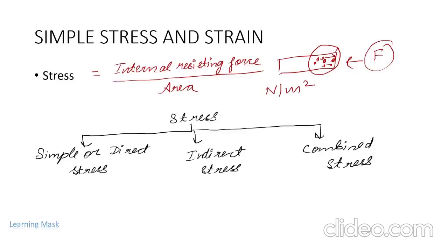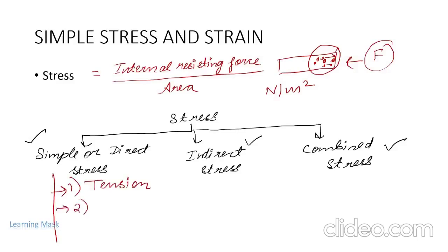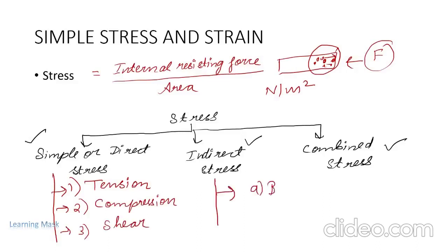We classify stress as simple or direct stress, indirect stress, or combined stress. In simple and direct stress we have three classifications: first is tension, which we can call tensile force; second is compression or compressive force; and third is shear. For indirect stress we have two categories: bending and torsion.